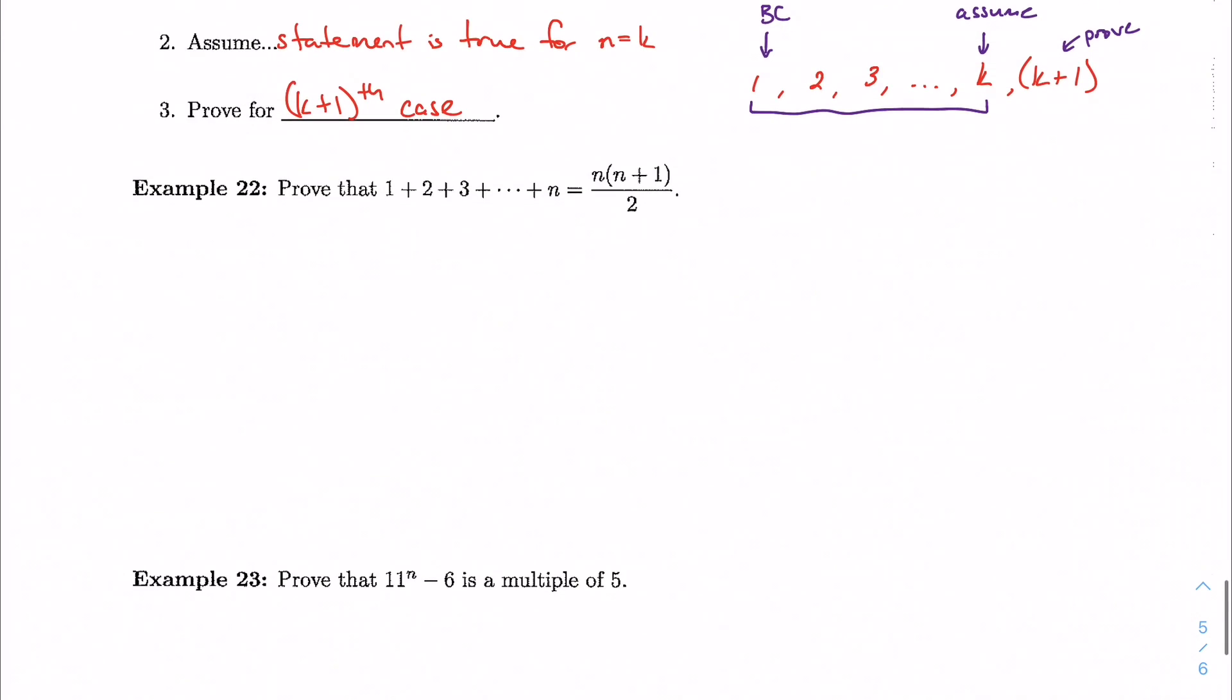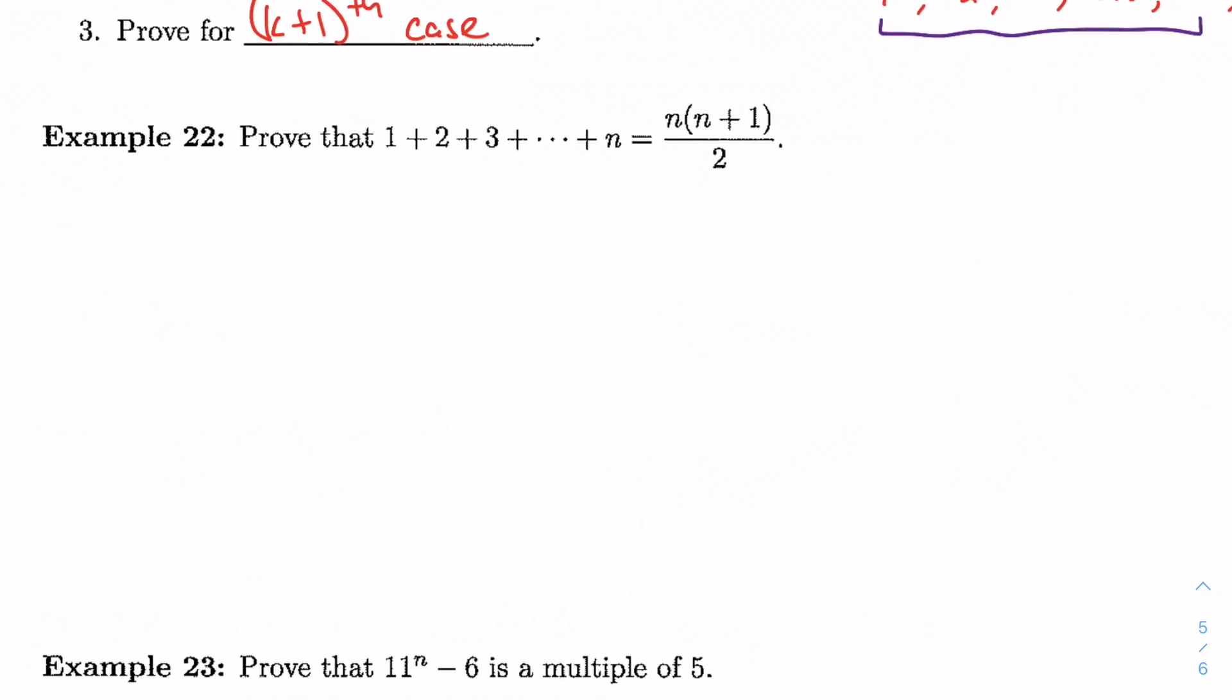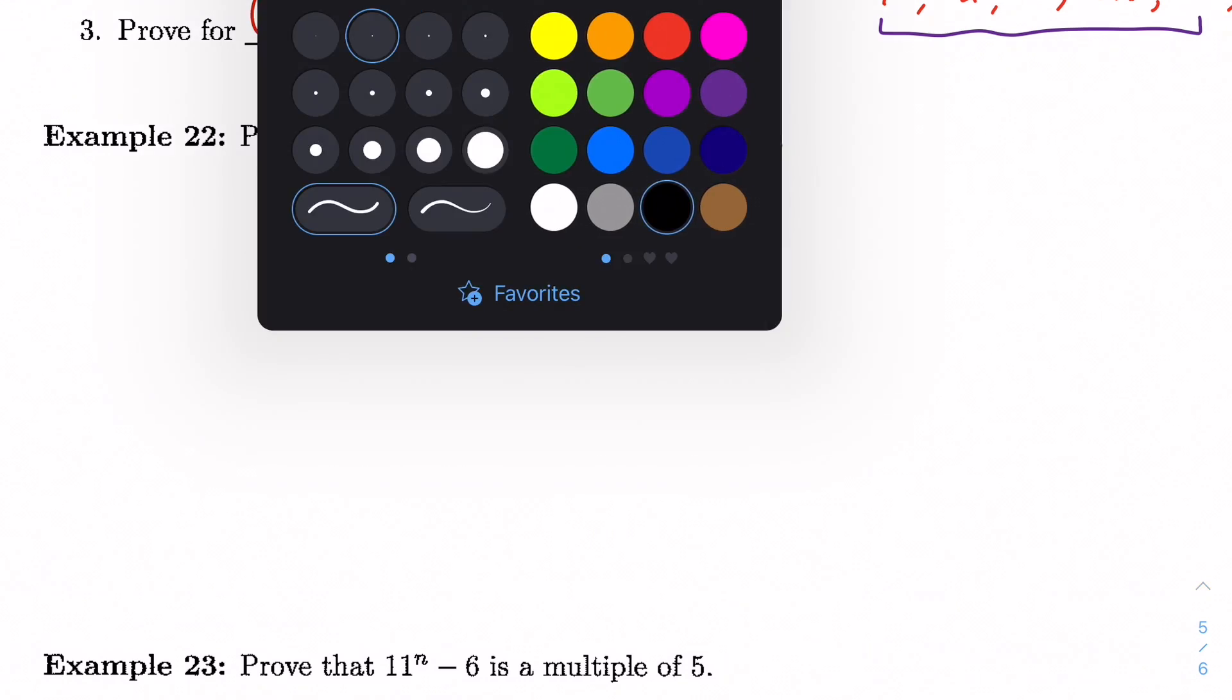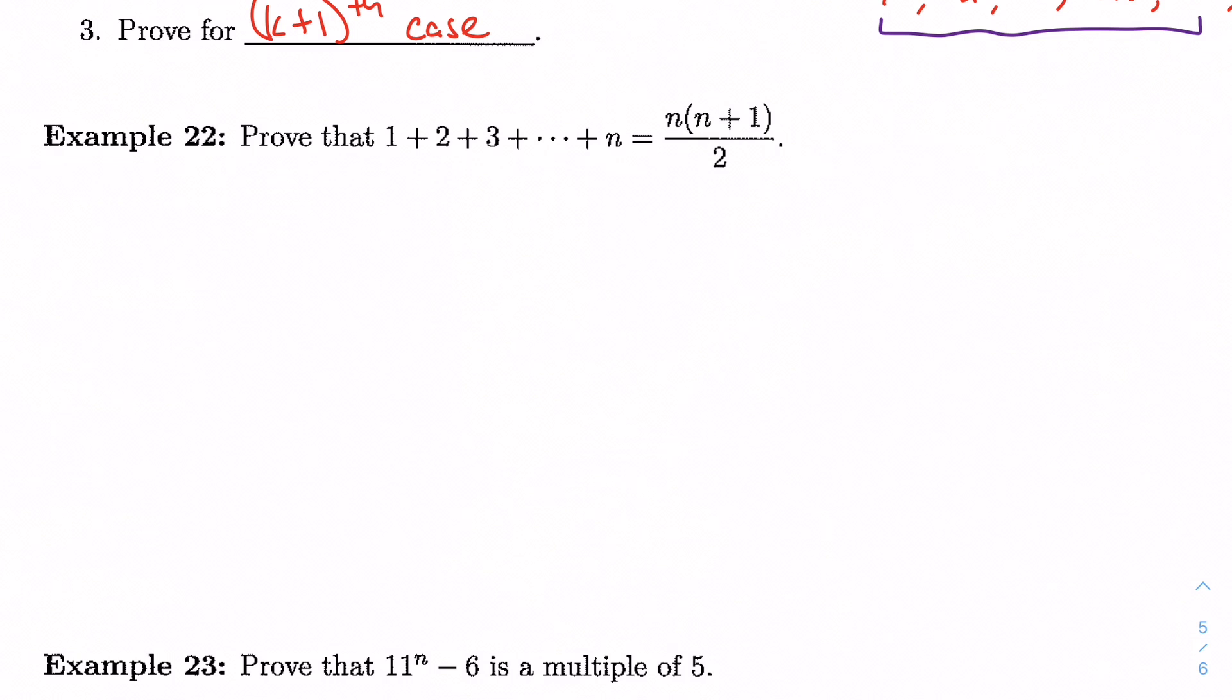Let's look at an example. Prove that this statement, prove that 1 plus 2 plus 3 all the way up to n is equal to this expression, n times (n plus 1) over 2. And this is absolutely true. This is a big thing in something called number theory.